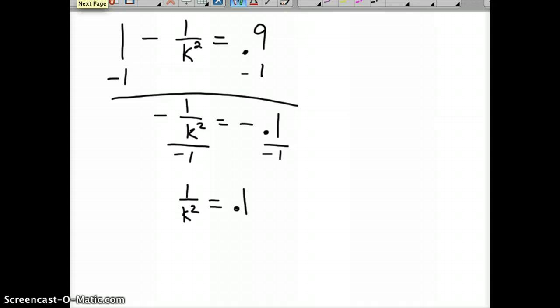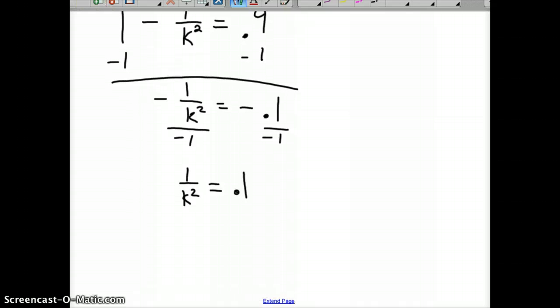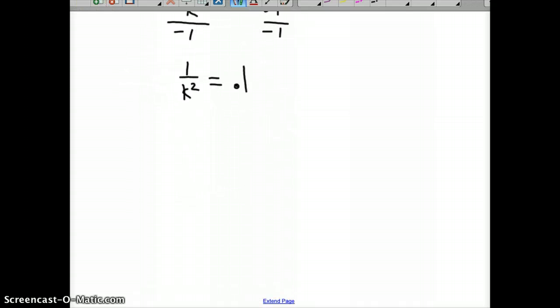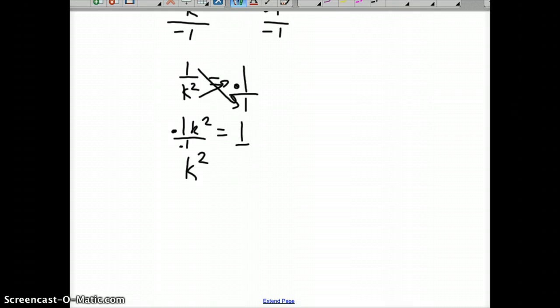And divide by negative 1 to get rid of that or multiply by negative 1, either way. So 1 over k squared equals positive 0.1. And this time, I mean, you could use 1 over 10 and cross multiply. But let's just use the decimal. So if this would be over 1, and so if you cross multiply, you'd have 0.1 k squared equals 1. Going this direction. And so k squared, because we've got to divide by 0.1 on both sides of the equation, k squared is equal to 10.